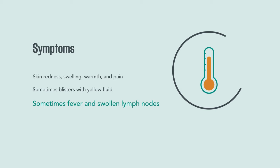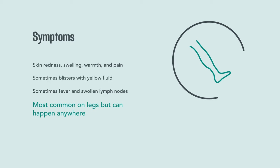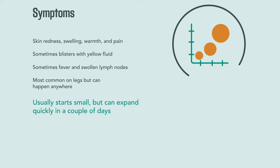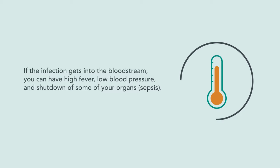The infection is most common on the legs but can happen anywhere on the body. In a couple of days it could spread from a spot the size of a quarter on your calf to cover your entire lower leg. If the infection gets into the bloodstream, you can have high fever, low blood pressure, and shutdown of some of your organs.